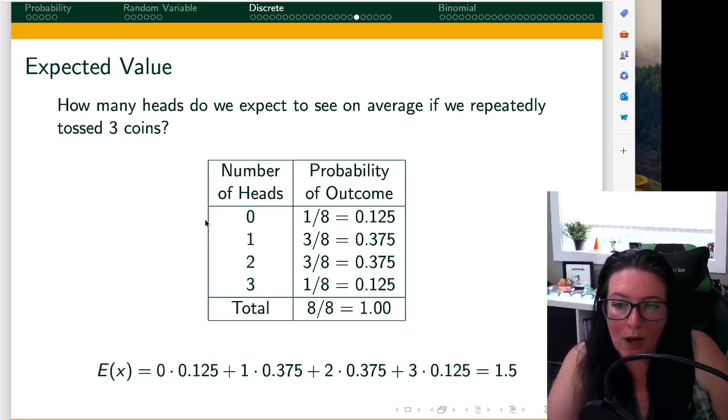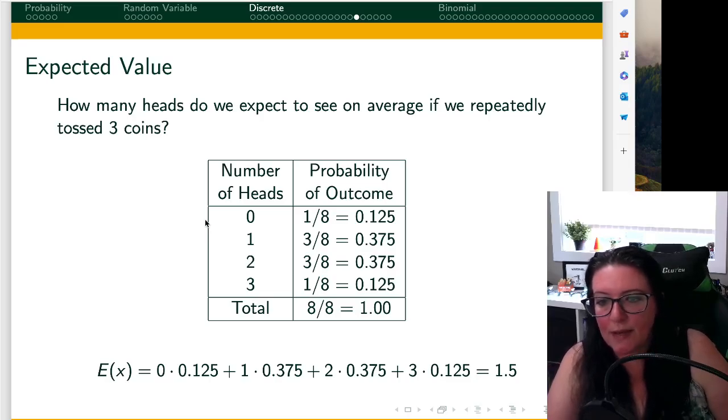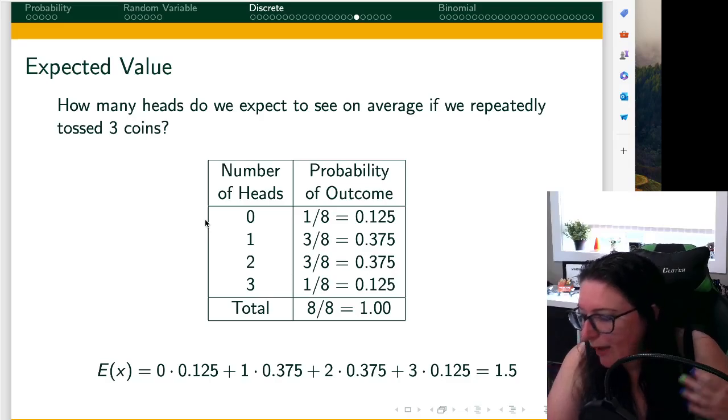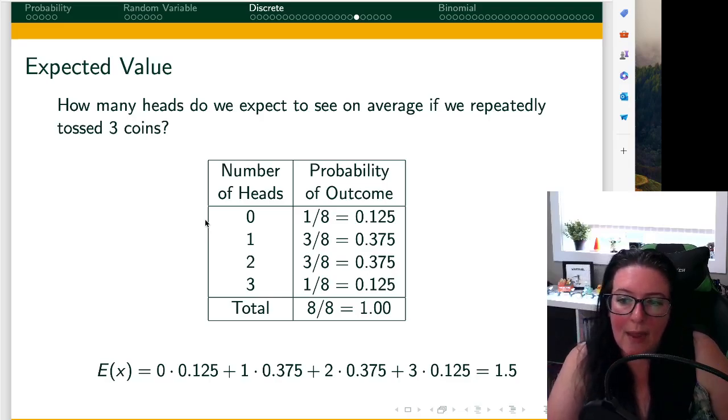Number of heads being one happened in three of the eight rounds, so 37.5%. We found two heads occurred three out of the eight rounds, 37.5%, and the number of heads were three, all three for the three coin tosses happened once out of the eight, so 12.5%. So to find the expected value,